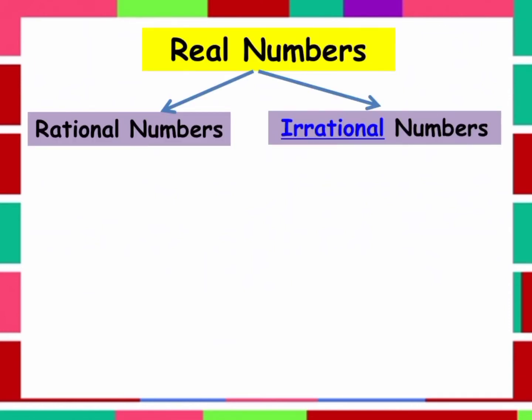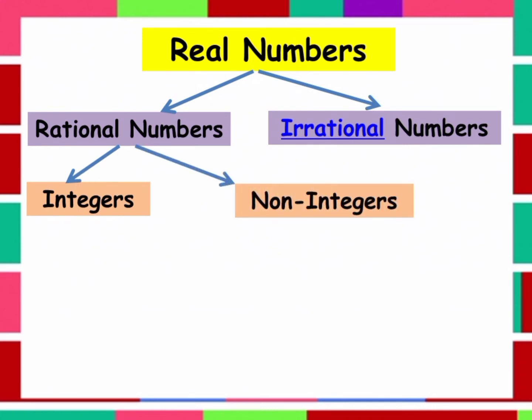So under the rational numbers, there are integers and the non-integers. And we all know that the integers are the negative numbers, the whole numbers.